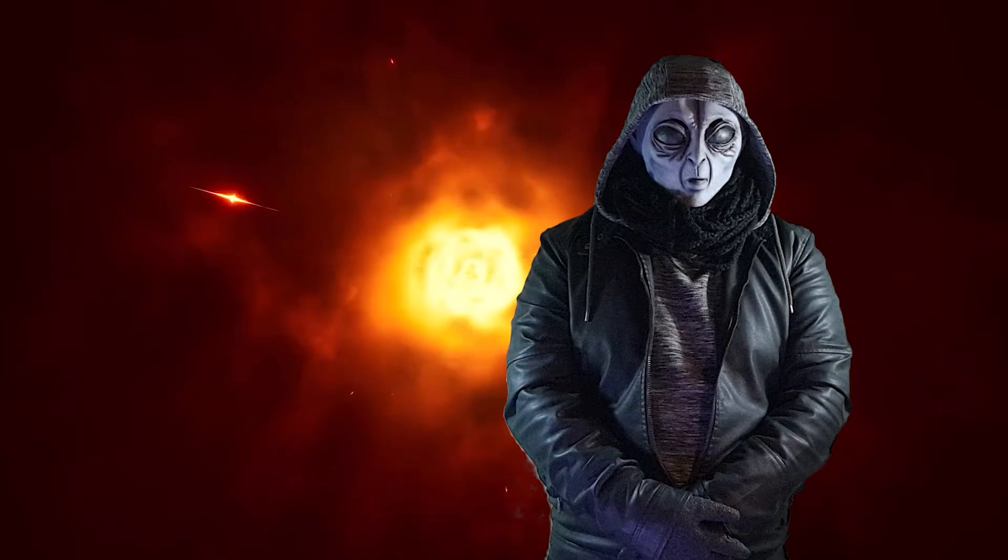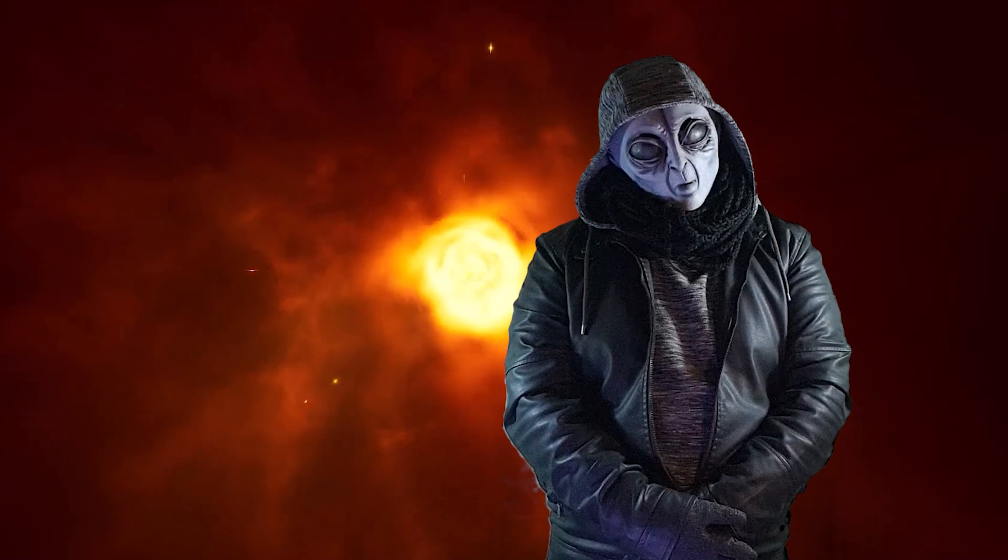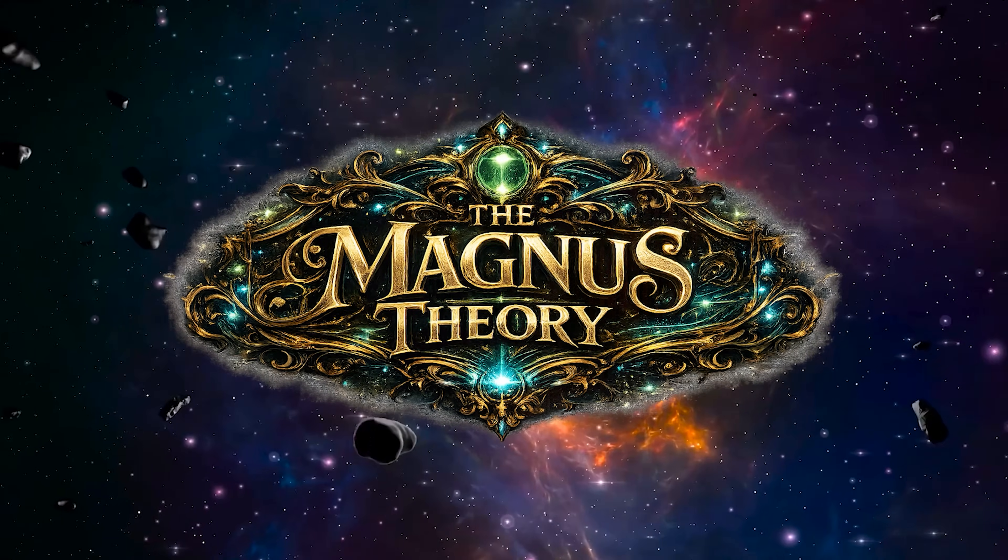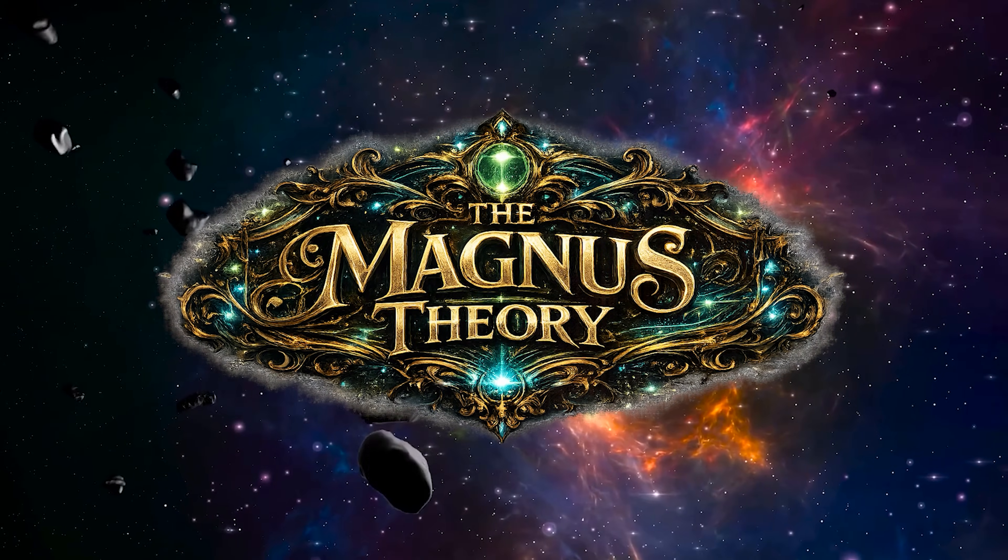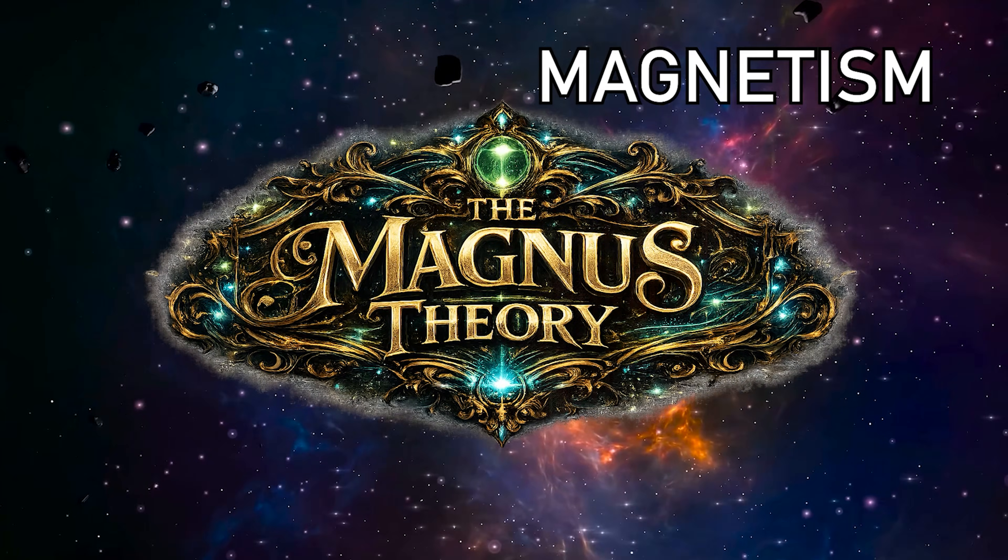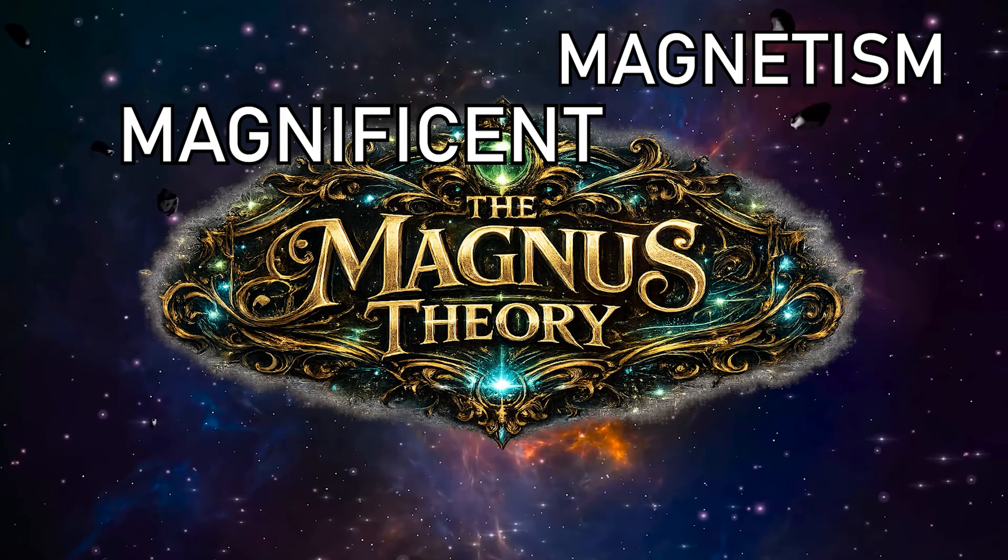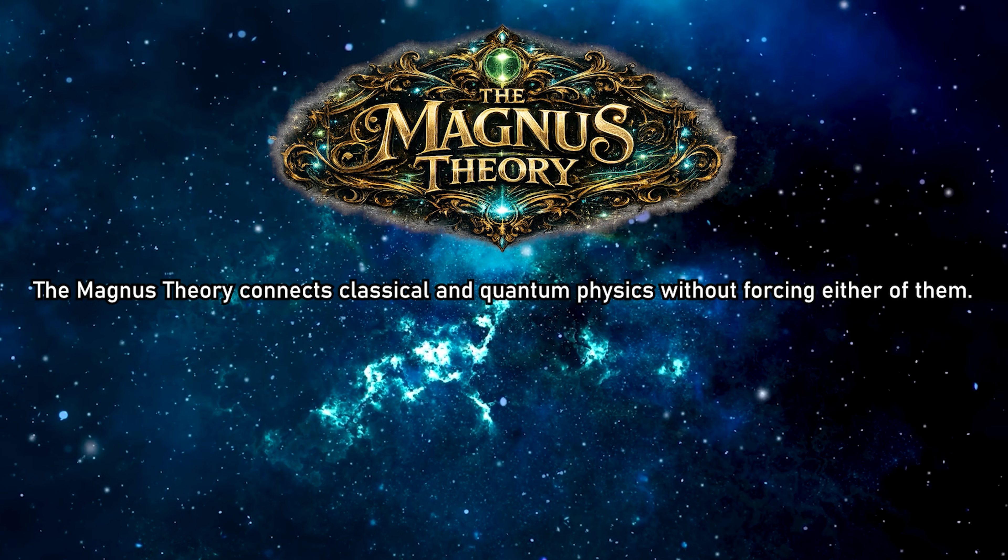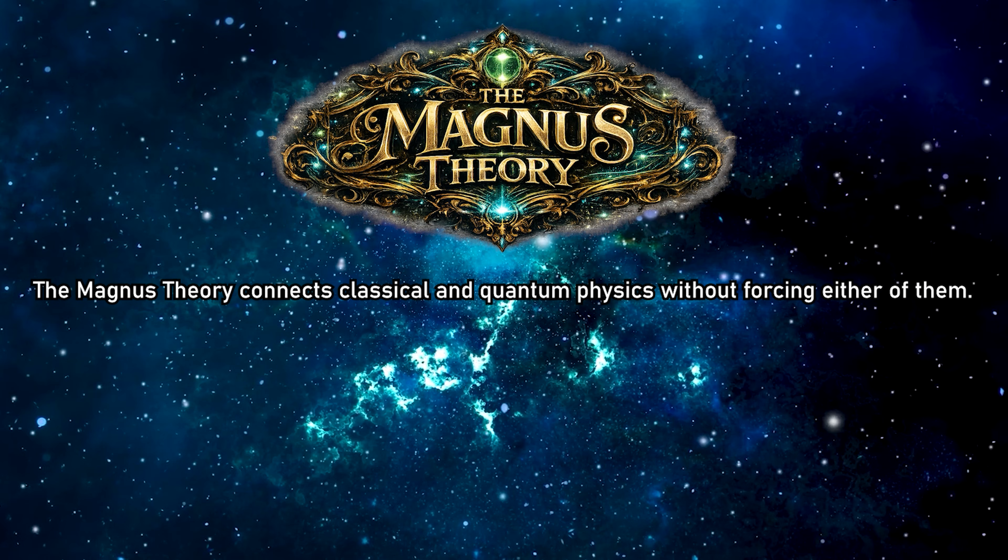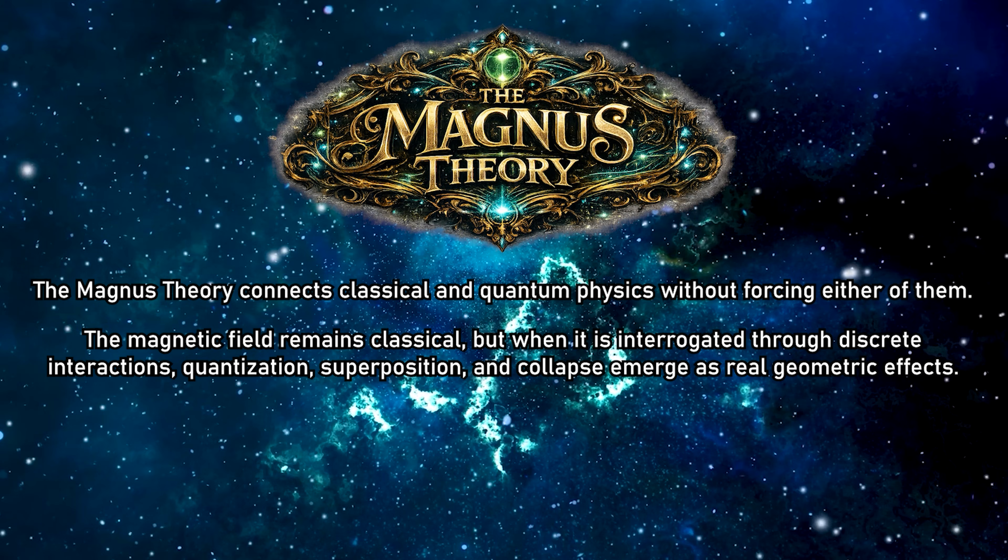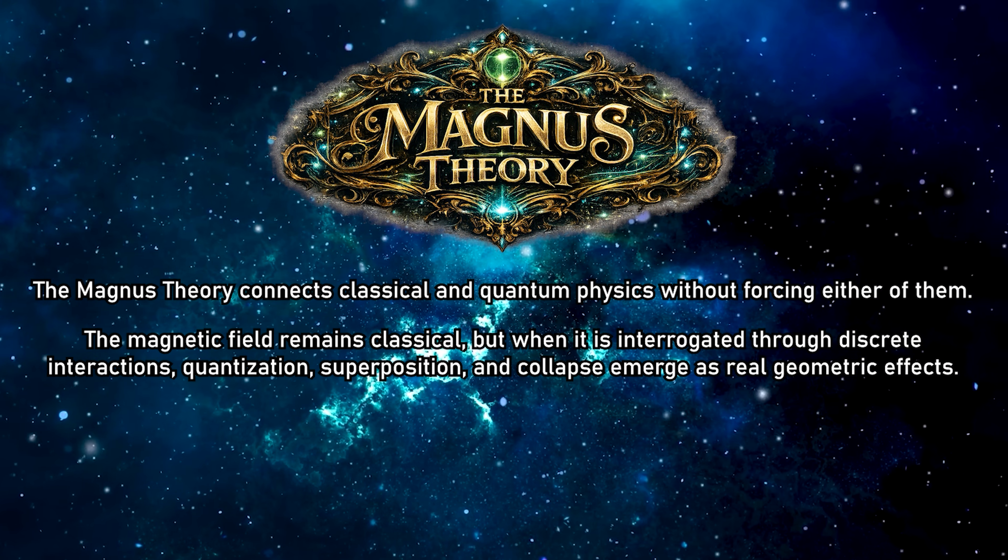Because everything we have just described also represents the core pillars of the Magnus theory. A theory born directly from the facts you have witnessed and that you can reproduce with your own hands. The name Magnus echoes the same root as magnetism, and in Latin it means great or magnificent. Marcio chose this name to pay tribute to something this deep. And what it states is extremely simple. The Magnus theory connects classical and quantum physics without forcing either of them. The magnetic field remains classical, but when it is interrogated through discrete interactions, quantization, superposition, and collapse emerge as real geometric effects.